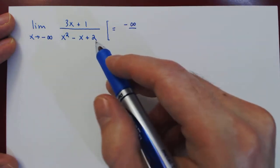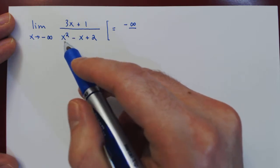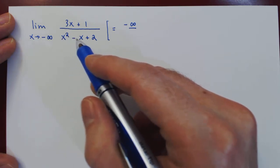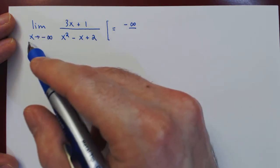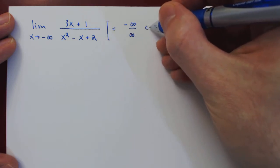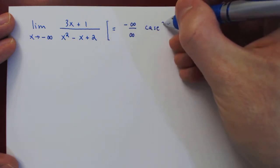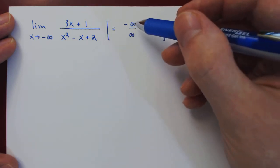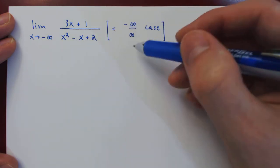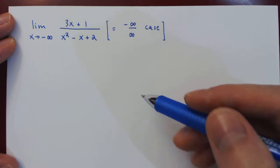On the denominator, the largest power of x is 2, so x squared is the dominant term. As x goes to negative infinity, x squared goes to positive infinity. So we have an indeterminate case: a ratio of two quantities that are each getting larger and larger, one negative, the other positive.